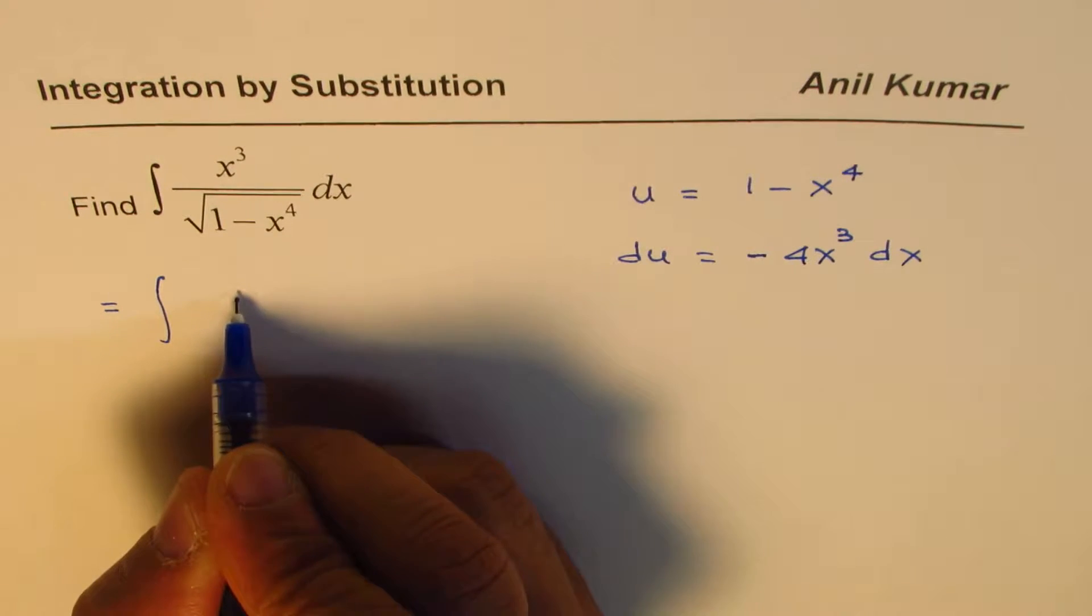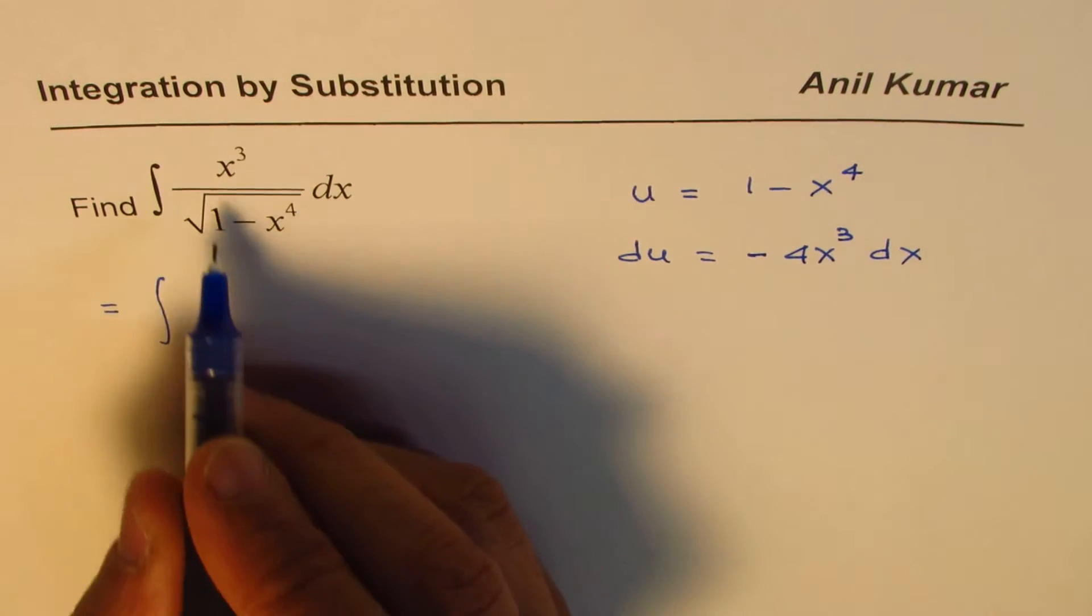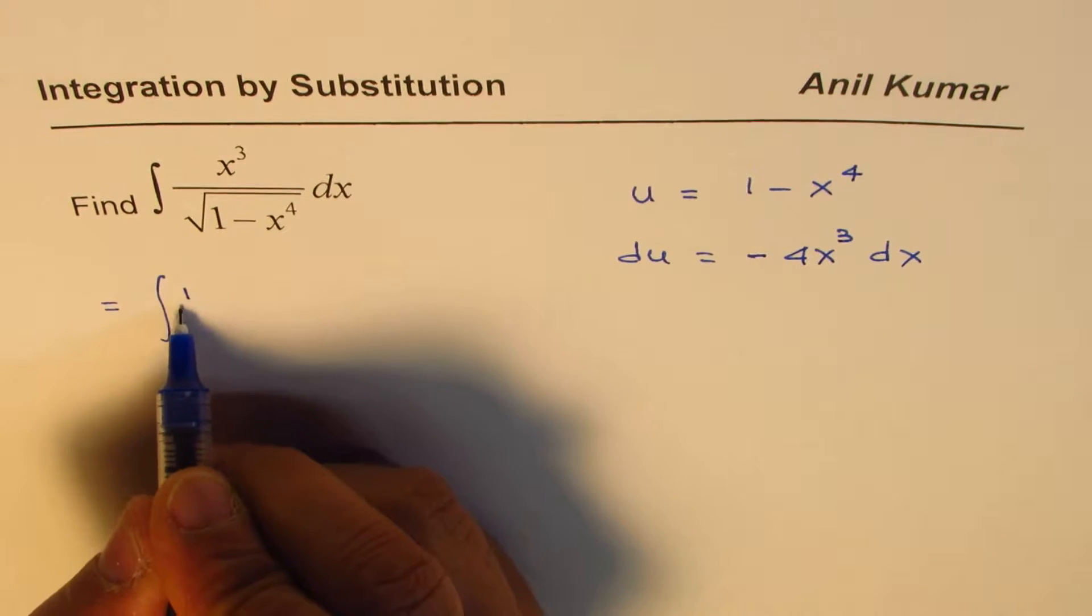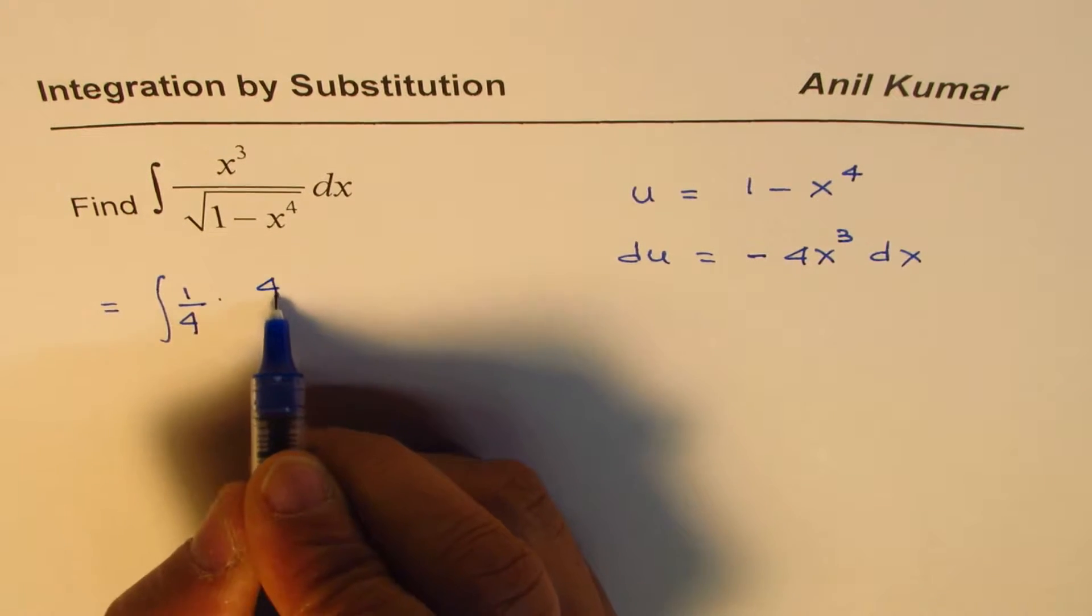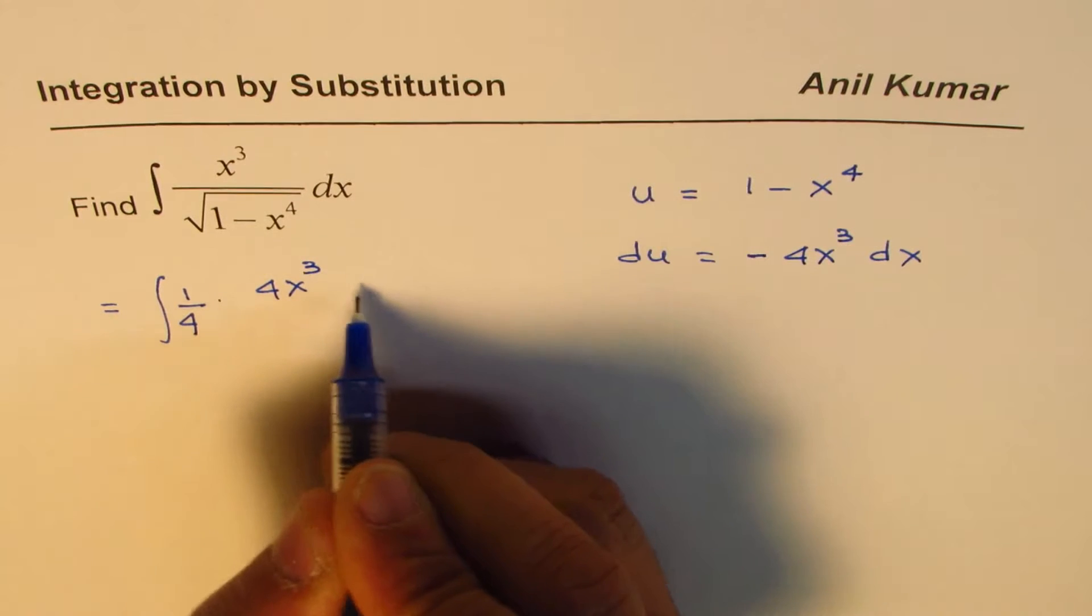Integral of, you can say, we need 4x cube, right? So I'll write here 1 fourth, and then we can write 4x cube dx,